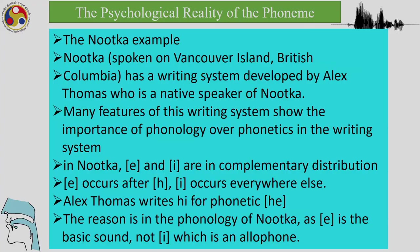In the Nootka example — Nootka is spoken on Vancouver Island, British Columbia, with a writing system developed by Alex Thomas, a native speaker — features of this writing system show the importance of phonology in writing systems. In Nootka, the vowels A and E are in complementary distribution: A occurs after a uvular consonant and E occurs everywhere else. So Alex Thomas writes E for A; the underlying form is E, which becomes A because of a preceding uvular consonant.